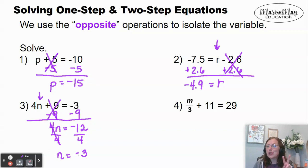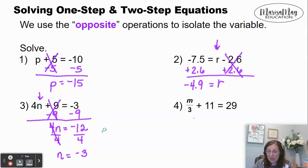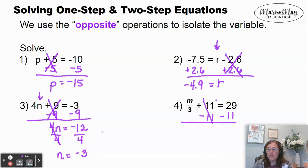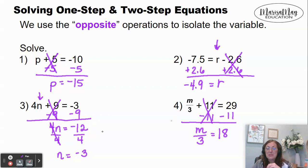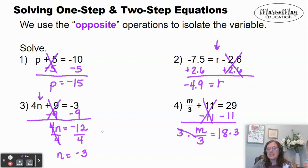These are called a two-step equation because there are two things we had to do to get the variable by itself. Look at problem number four here. What's happening to your variable? It's being divided by 3, and it's being added by 11. So we do the opposite of the adding 11 part first — the opposite of adding 11 is to subtract 11. Those opposites cancel, and we're left with m divided by 3 equals 18. The opposite of dividing by 3 is to multiply by 3, so we multiply by 3 on both sides. Opposites cancel, leaving me with m equals 54.